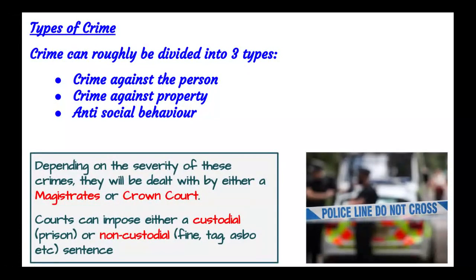Let's talk about the types of crime we see in the UK. They can roughly be divided into three categories: crime against the person, such as assault, grievous bodily harm, and murder; crime against property, like vandalism and arson; and anti-social behaviour, such as drink driving. Depending on severity, these crimes are dealt with either by a magistrate's court or the crown court.